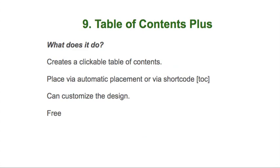My ninth plugin — and these are in no particular order — is the Table of Contents Plus plugin. It's free, and you simply put a shortcode into a post and it automatically creates a table of contents, hyperlinking to your H2, H3, and other headings. You can have it display site-wide automatically, but I prefer to use the TOC shortcode so I can control placement — sometimes after the introduction rather than just at the top. I like adding tables of contents and I tend to publish fairly long content with a lot of headings, so it makes sense.